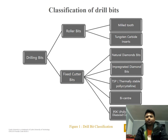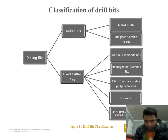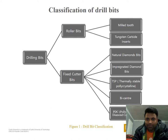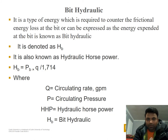The classification of drill bits: a drill bit is divided into two parts. The first is the roller cone bit — which includes mill-toothed and tungsten carbide. The second is the fixed cutter bit, which is further divided into natural diamond bits, impregnated diamond bits, DSP (thermally stable polycrystalline), bi-center, and PDC (polycrystalline diamond compact) bits.